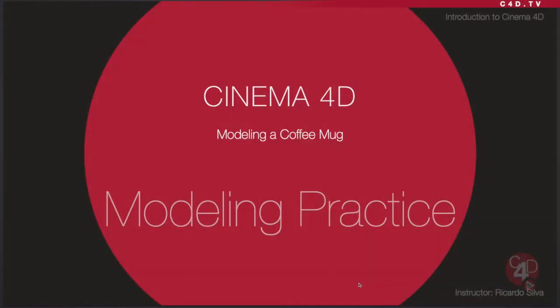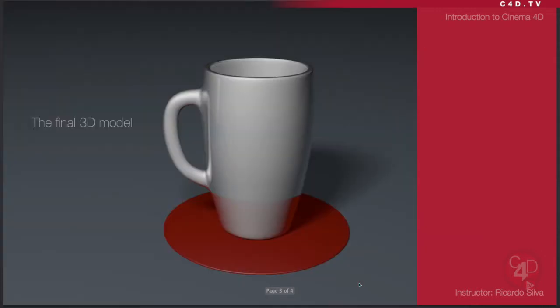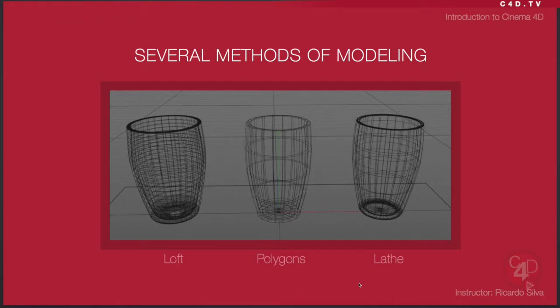Hello and welcome to another Cinema 4D tutorial. My name is Ricardo Silva. Today I'm going to be modeling a coffee mug. You probably have heard me saying that there is no right or wrong way of modeling objects, and this is a perfect example of that. I propose to model a coffee mug in three different methods: the loft, using polygons, and using a lathe object.